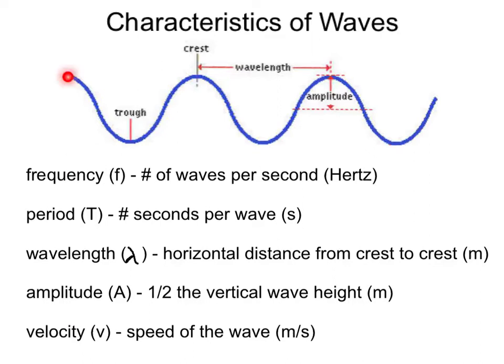Characteristics of waves. Let's look at a transverse wave to learn the various characteristics. The frequency, represented by the letter F, is simply the number of waves per second, and the units of frequency are hertz, often abbreviated Hz. The period, represented by capital letter T, is the number of seconds per wave, measured in seconds. The wavelength, symbolized by the Greek letter lambda, is the horizontal distance from crest to crest, measured in meters. Here we can see the wavelength from crest to crest of our transverse wave.